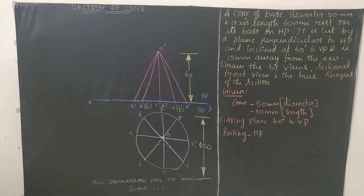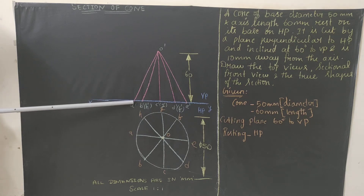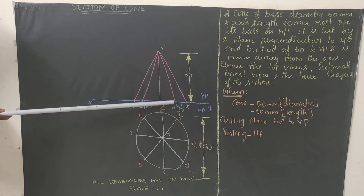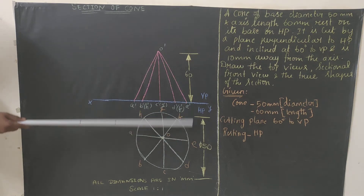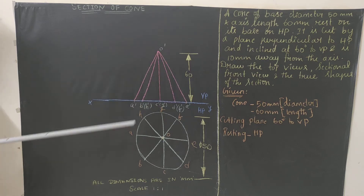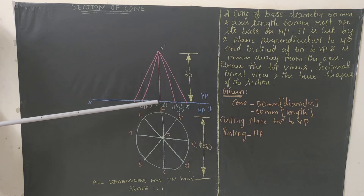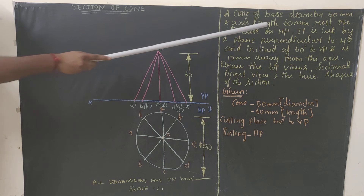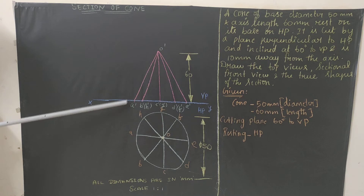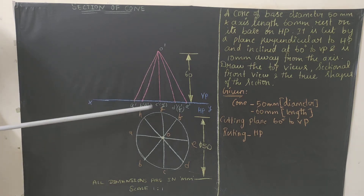To get the front view, extend all the top view points vertically. Keep your scale vertically on A to get that point, on H, on G, on F, and on E to get each corresponding point — giving you five points. This is the center, so from here for 60 mm we draw upward, since axis length is 60 mm. That top point is called O-dash. From O-dash, join all the projected points.